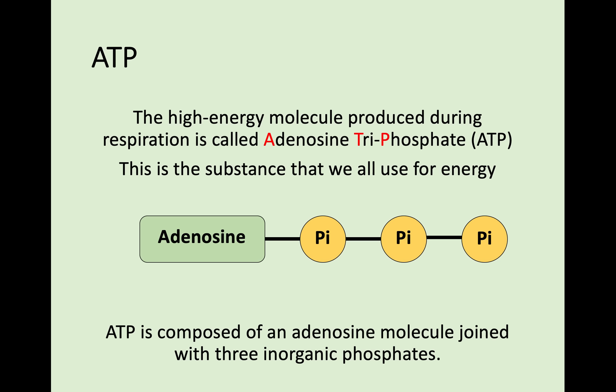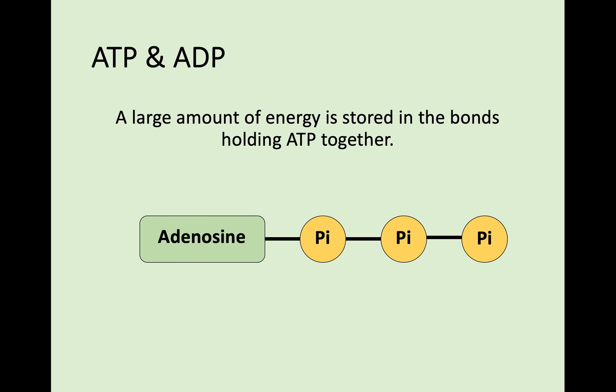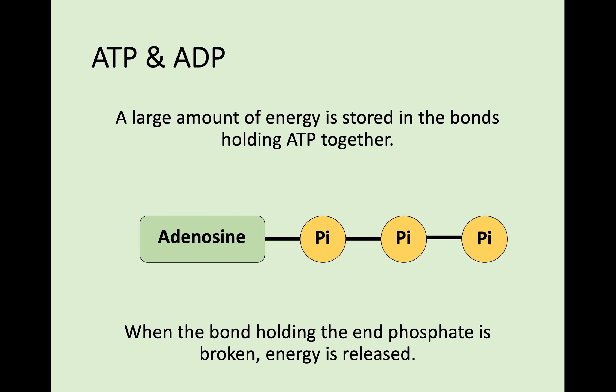The high energy molecule produced during the process of respiration is called adenosine triphosphate — tri meaning three — so adenosine and three phosphates. This is the substance that we all use for energy. From this diagram you can see there is an adenosine molecule and three molecules of phosphate all joined together through these bonds. There is a lot of energy stored within these bonds which hold ATP together. If the bond at the terminal end of the phosphate chain is broken, then energy is released.